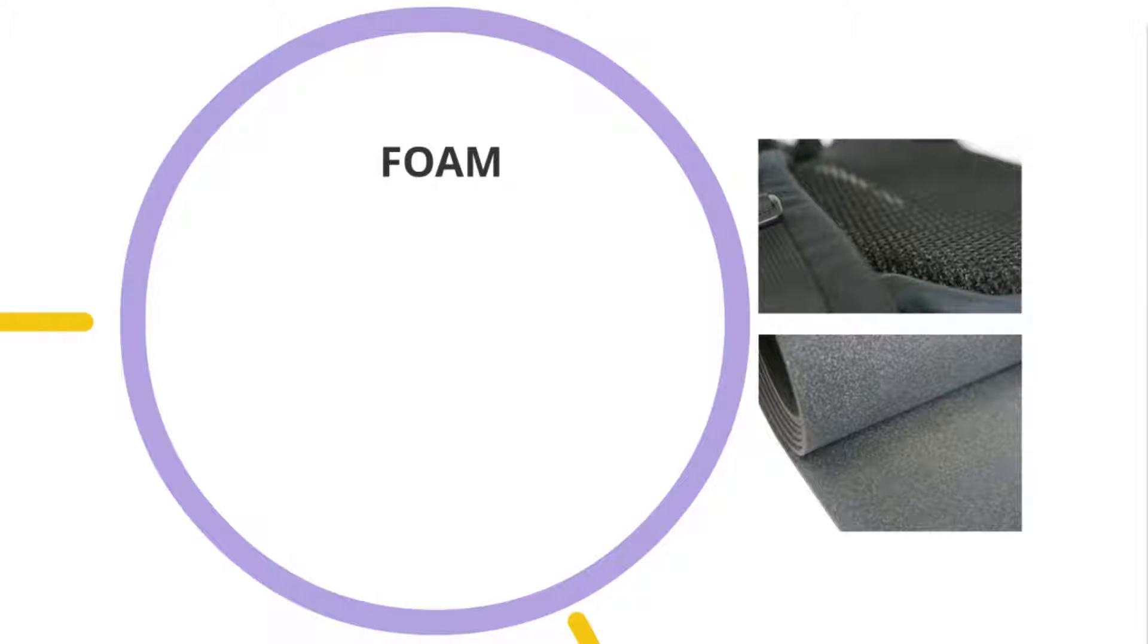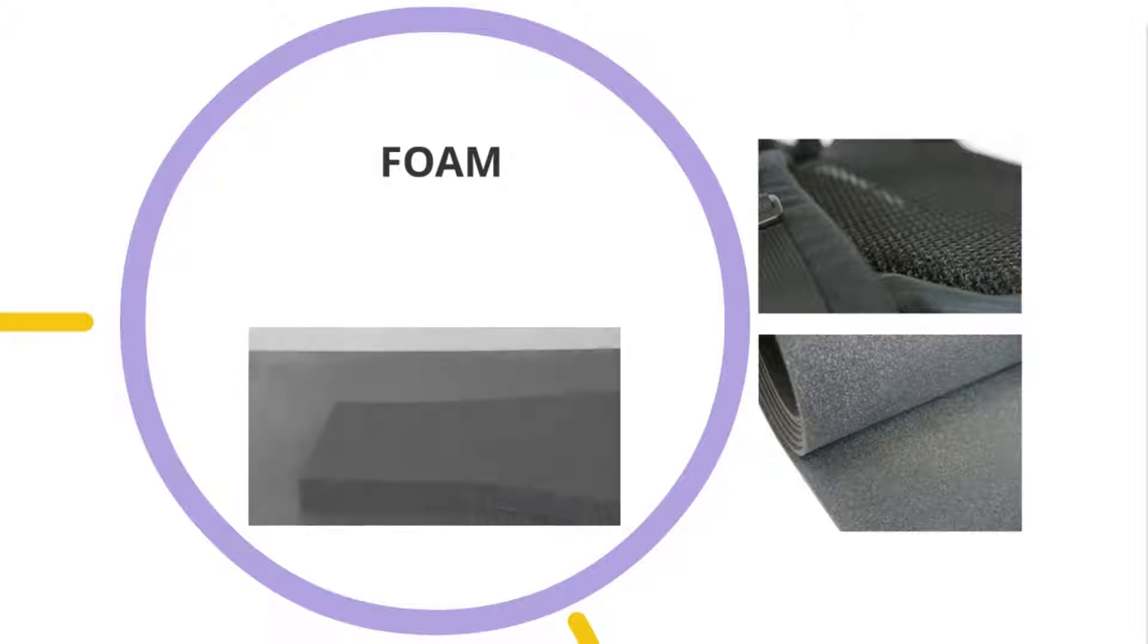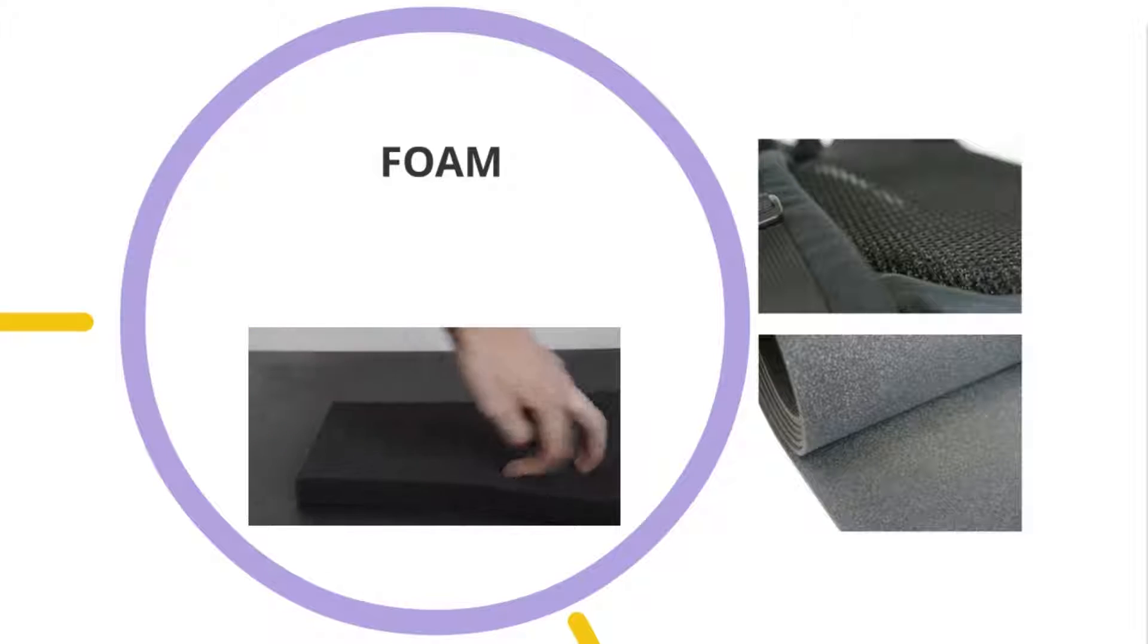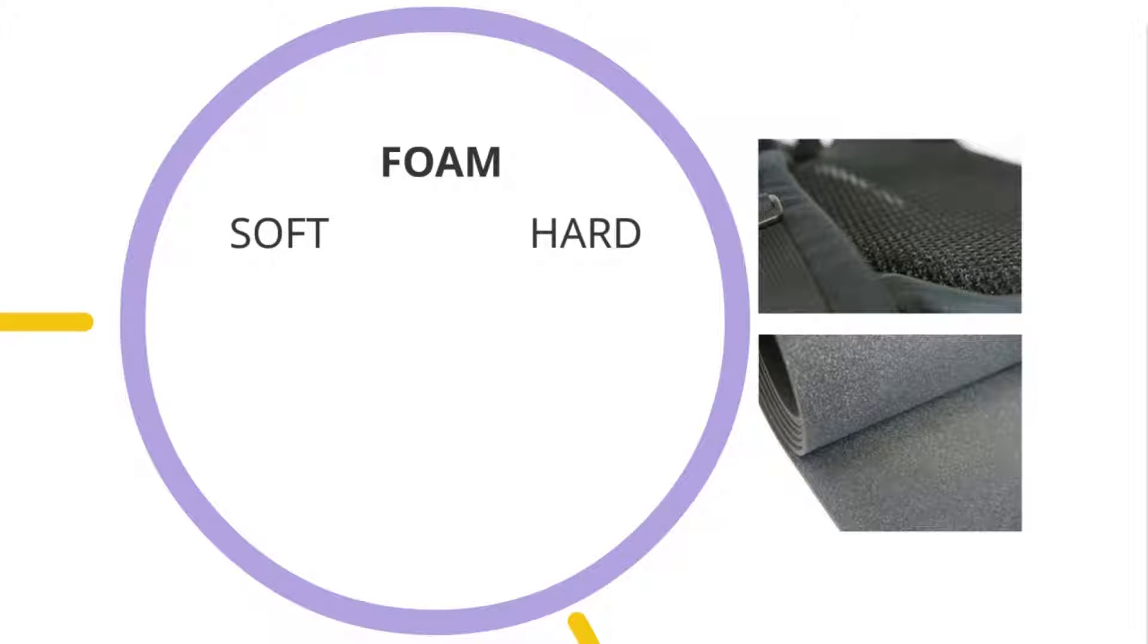We use foam in hip belts, our different back systems and shoulder straps. Foam is used to ensure comfort when carrying heavy loads. One could say that soft foam is more comfortable than hard foam. However, the softness of foam comes with long-term issues of being way too flexible to handle a proper weight distribution.